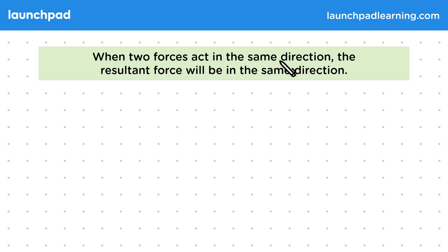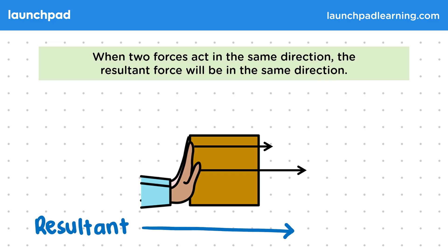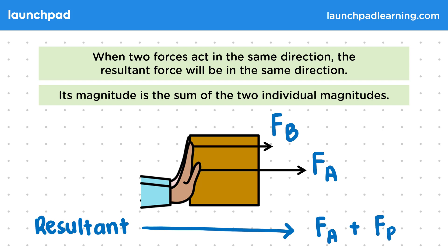When two forces act in the same direction, the resultant force will be in the same direction. So two people pushing the same box is an example of forces acting in the same direction. The resultant force is to the right, which is the same direction as the individual forces. Its magnitude is the sum of the two individual magnitudes, so that is FA plus FB.